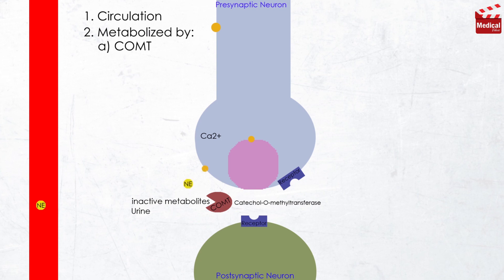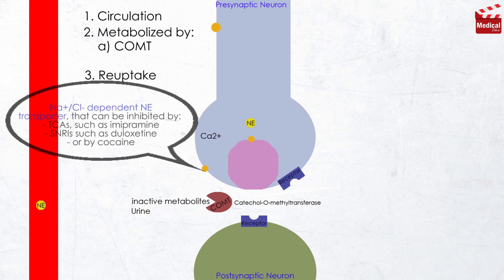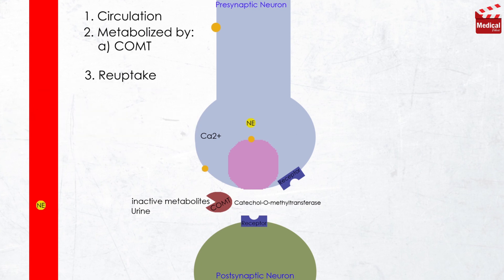Or it may undergo reuptake into the neuron. The reuptake by the neuronal membrane involves a sodium chloride-dependent norepinephrine transporter that can be inhibited by tricyclic antidepressants such as imipramine, by serotonin norepinephrine reuptake inhibitors such as duloxetine, or by cocaine, which we'll discuss later. Reuptake of norepinephrine into the presynaptic neuron is the primary mechanism for termination of its effects.